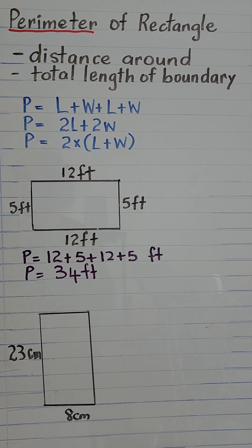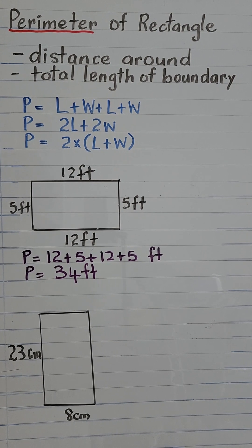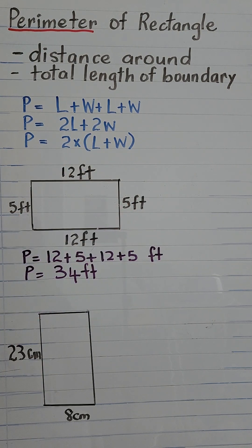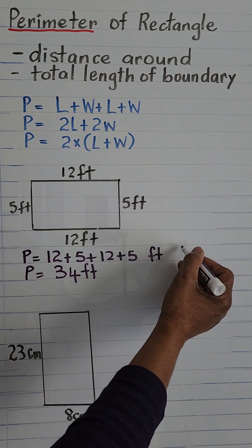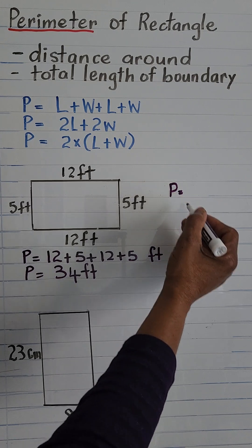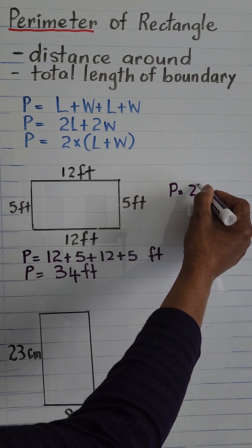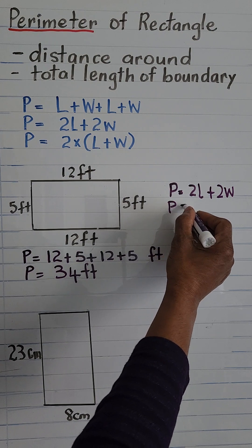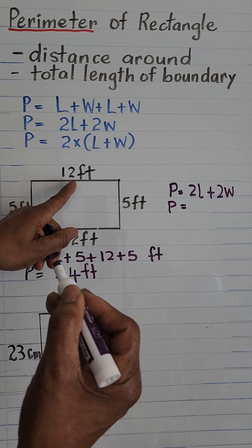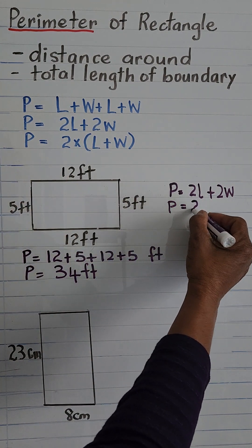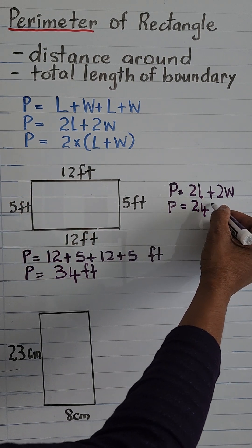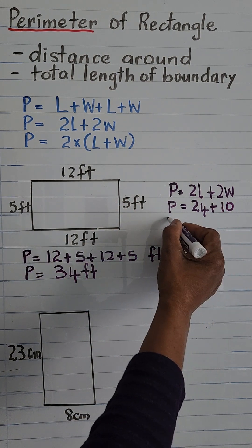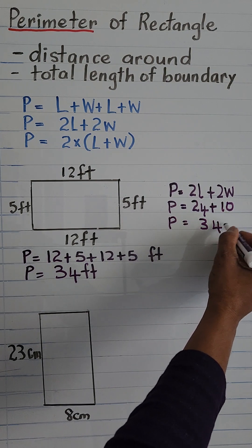That's using the first formula. Now let's write P is equal to 2 length plus 2 width. Here we have 2 length plus 2 width, so P equals 2L plus 2W. P is equal to 2L which would be 24, that is 2 times 12, and then plus 2W, 2 times 5, 10. And we arrive at the same answer, 34 feet.